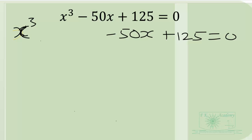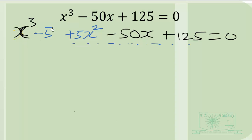We are going to use a trick that will help us factor a cubic polynomial. We will add and subtract the same value that will help us factor a quadratic trinomial. This expression is looking like a quadratic trinomial, so we add positive 5x squared and subtract the same quantity, so we have not changed the equation.